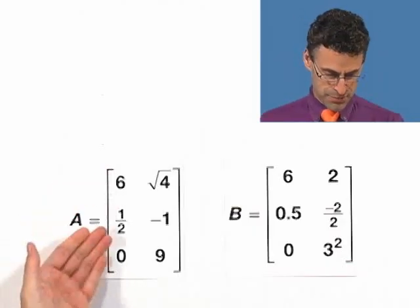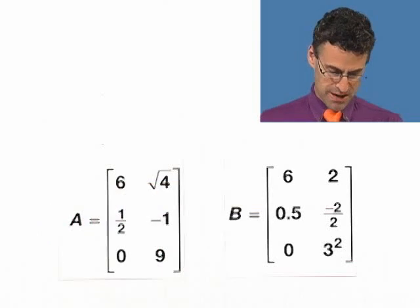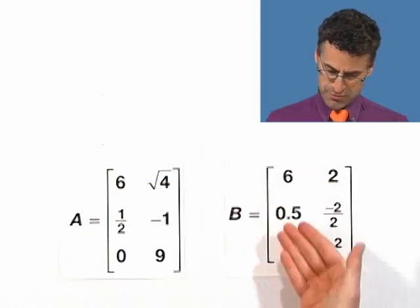Let's take a look at an example. Here's a matrix A, which is a 3 by 2 matrix, and a matrix B, which is also a 3 by 2 matrix.